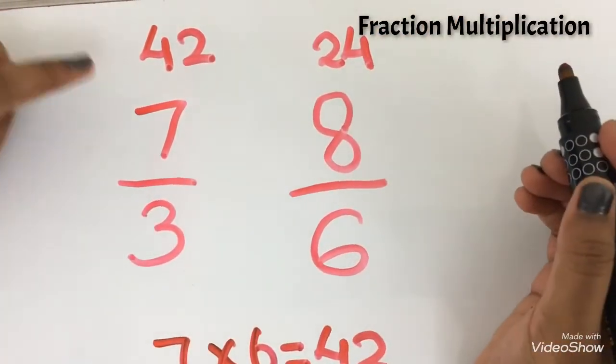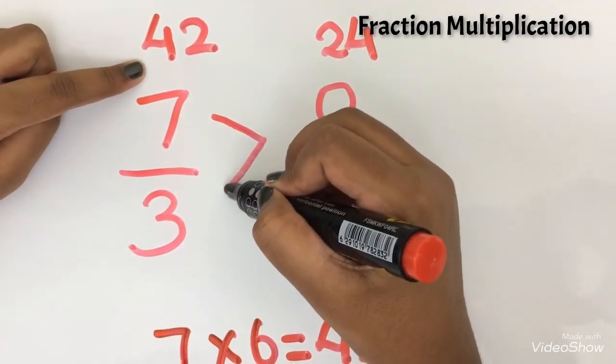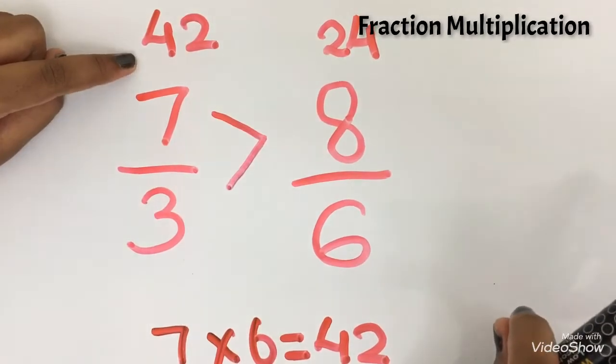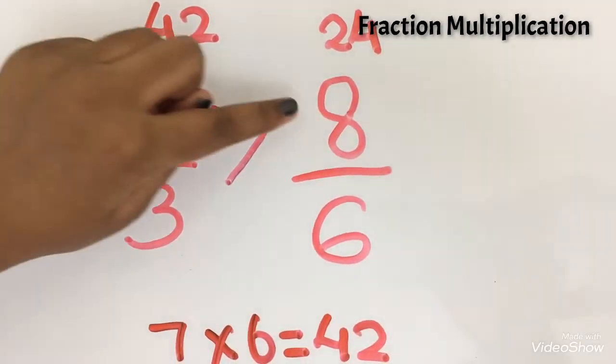So which is bigger? 42. So I am going to do this symbol, the greater than symbol. So now 42 is greater than 24. 7 by 3 is greater than 8 by 6.